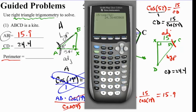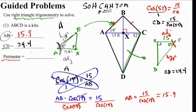So now we can take the perimeter, which is 15.9 plus 15.9 plus 24.4 plus 24.4, and we get 80.6. So that's the first problem. We used right triangle trigonometry to find the sides. We had to draw out separate triangles. And then we used the properties of kites, saying that the consecutive sides are congruent. And then we were able to find the perimeter.